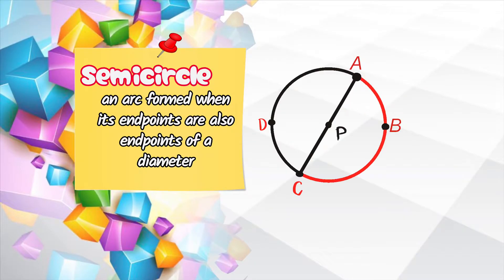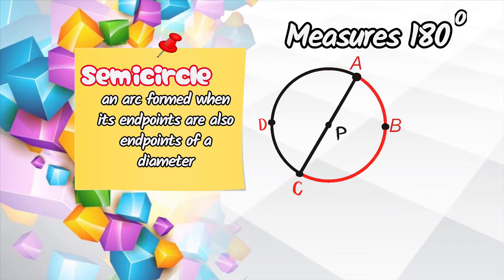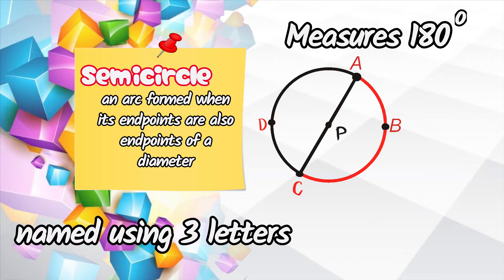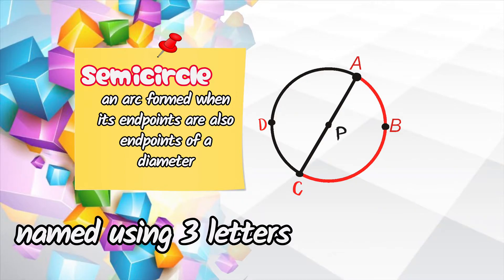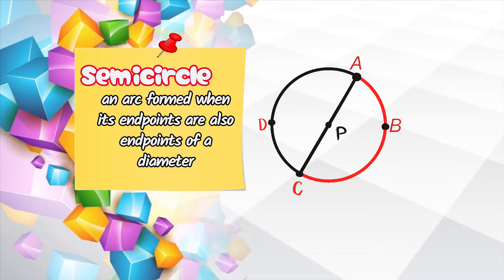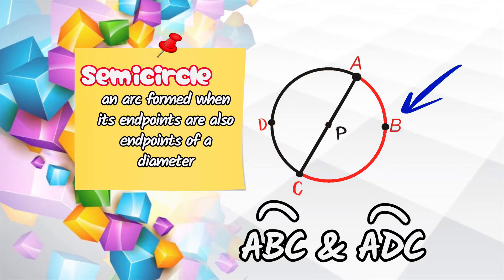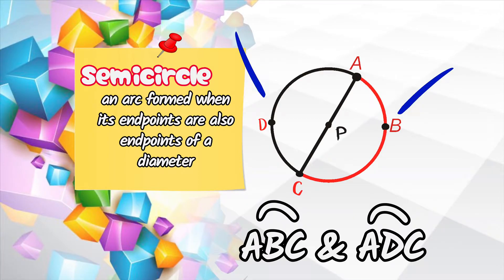A semicircle is an arc formed when its endpoints are also the endpoints of a diameter. It has a measure of 180 degrees and is named using three points on the circle. For example, in the given figure, arc ABC and arc ADC are semicircles.